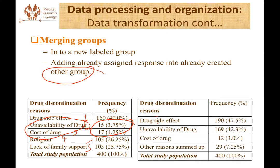For the same variable coded as 1, 2, 3, and 4, if cost of the drug has a very small response of 3% and we don't feel like merging it with the above category, the best thing to do is to merge cost of drug into the other group. Our code is then revised as: 1 for drug side effect, 2 for unavailability of drug, and 3 for other — by adding cost of drug into the other group. These are the ways of merging groups.